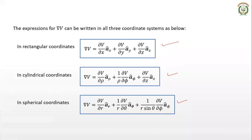To summarize today's session: we have learned about potential, potential difference, and potential gradient. The remaining topics in this module include the potential field of a point charge, the conservative property, energy stored in the field, and absolute potential. These will be discussed along with numerical examples in the next class.